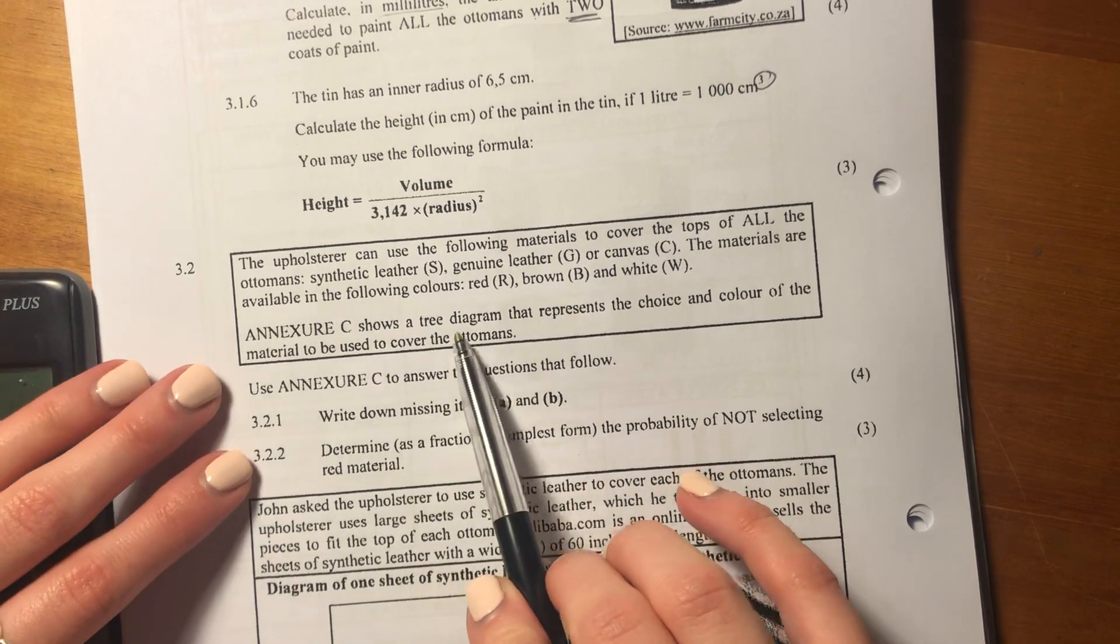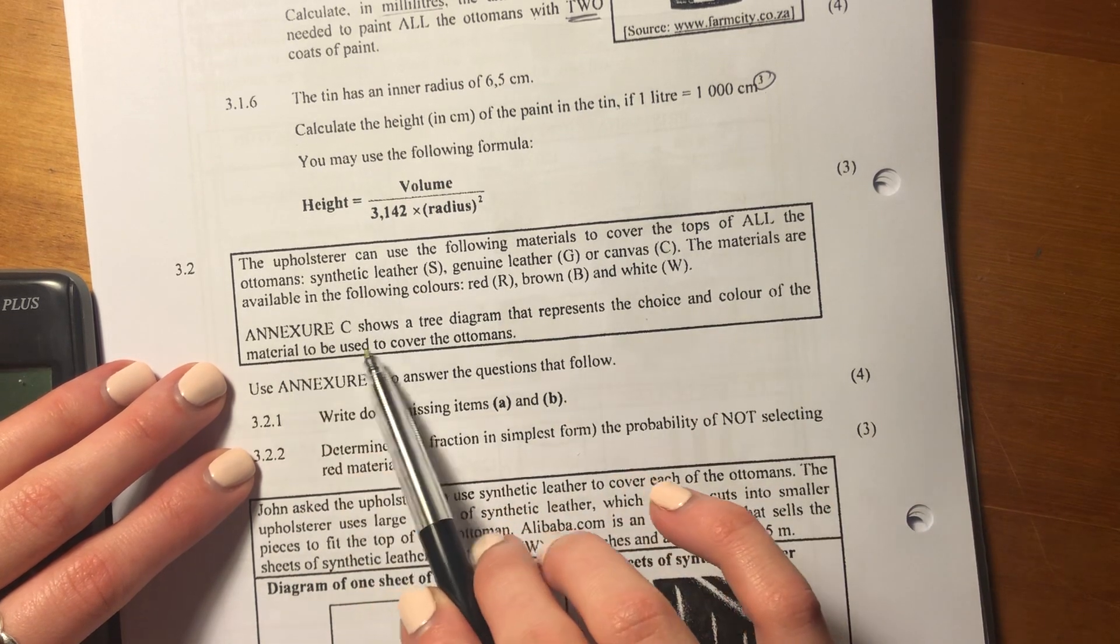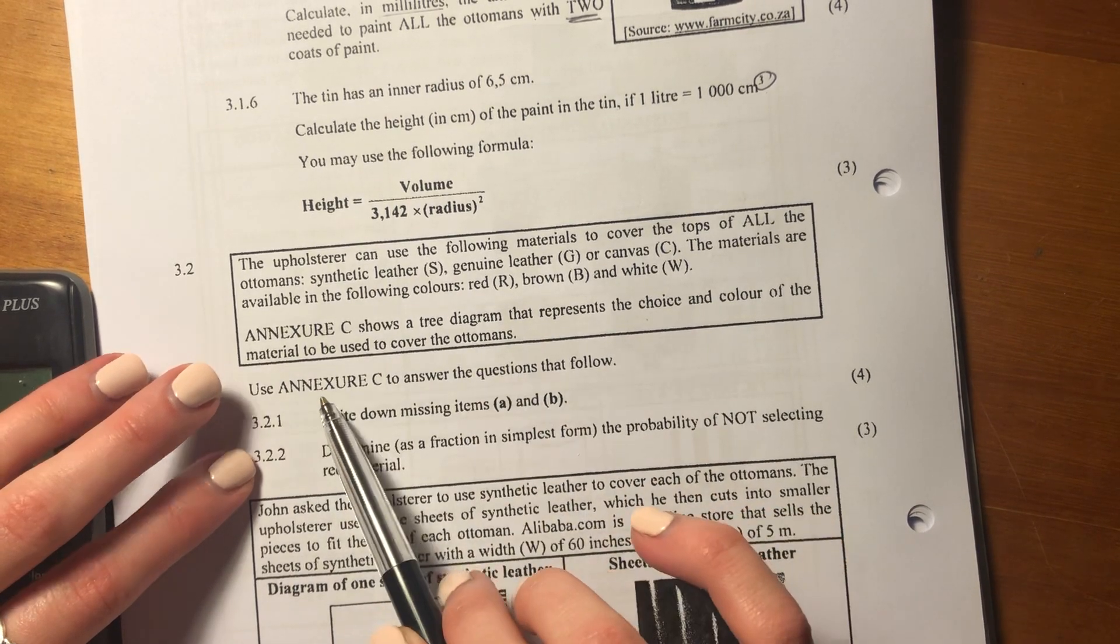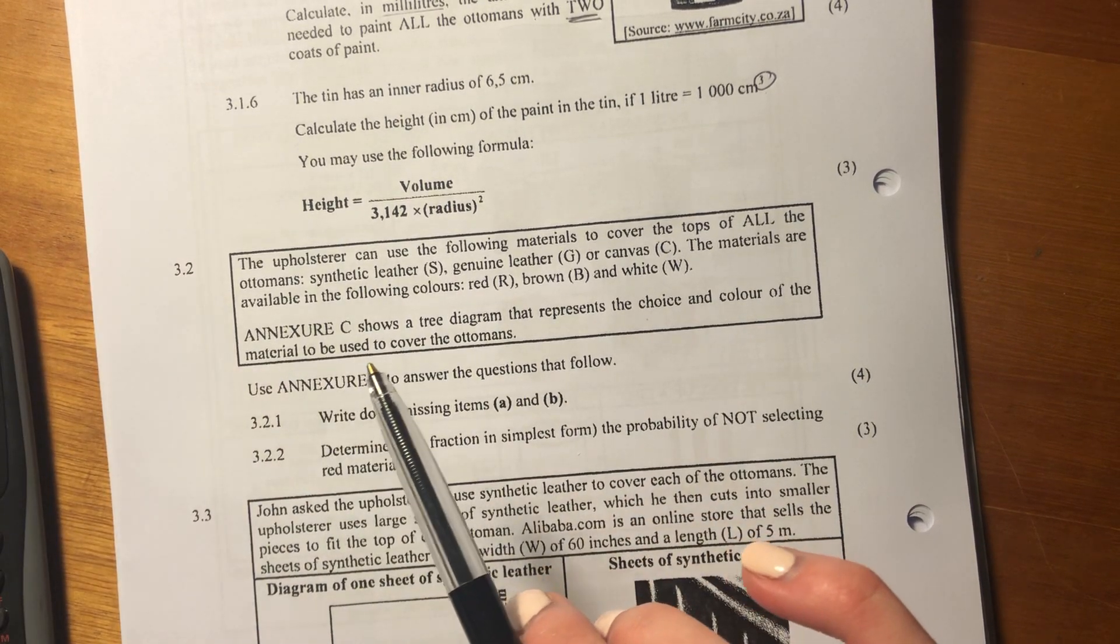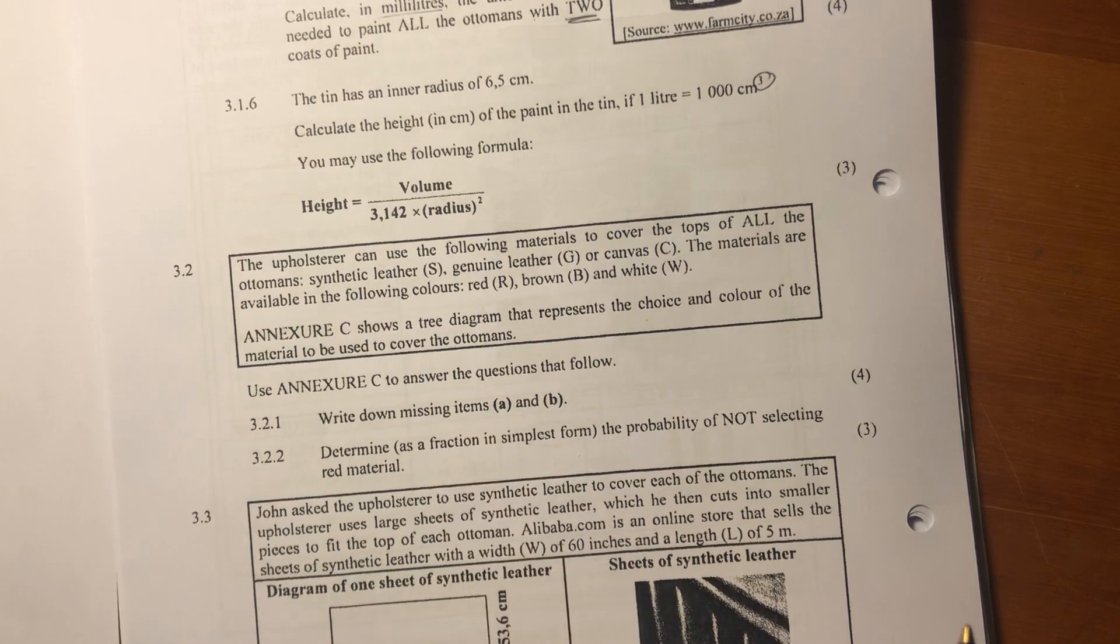Annexure C shows a tree diagram that represents the choice and color of material to be used to cover the Ottomans. So we need to find Annexure C. I've got it here with me. Make sure you have it as well. Then it says to answer the question that follows, write down the missing items A and B.